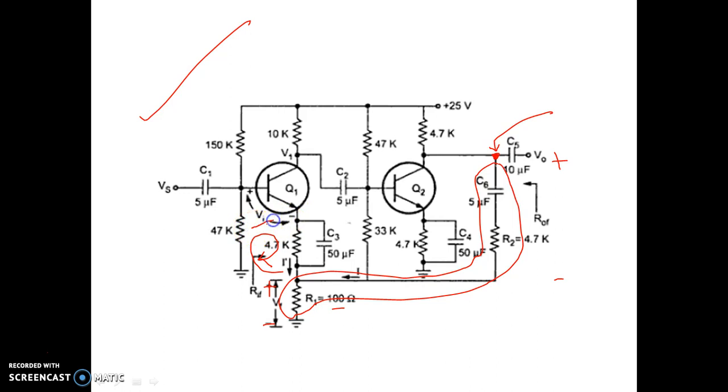So basically, what is happening is that for this case, in the input loop we are applying KVL, not KCL.